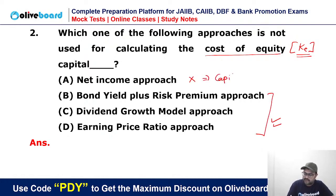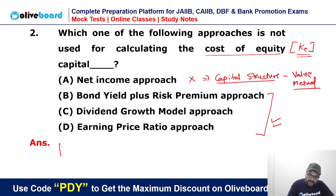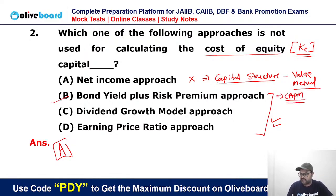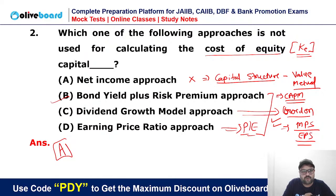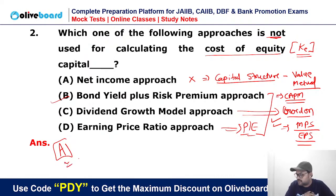The net income approach is a capital structure technique used to calculate the firm's value — it is a value method, not a Ke method. Bond yield plus risk premium is also known as CAPM — Capital Asset Pricing Model. The dividend approach was given by Mr. Gordon — a very famous and important name to remember. Earning price ratio, also called PE ratio, has the formula MPS divided by EPS, which gives us value. Since 'not used' was asked, the net income approach is the correct answer here.